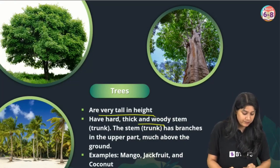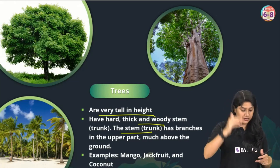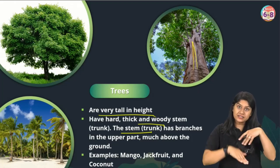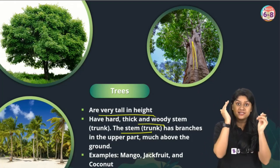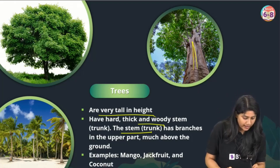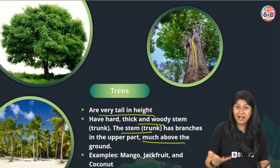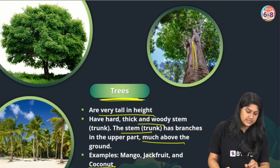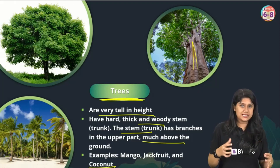Trees have branches in the upper part, well above the ground. Examples include mango, jackfruit, and coconut trees. Please remember the characteristics of each type as they are important from the exam point of view.